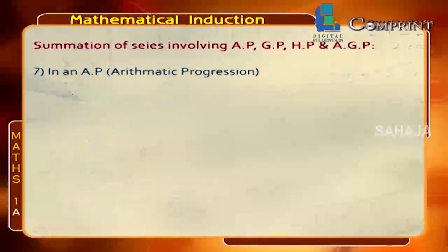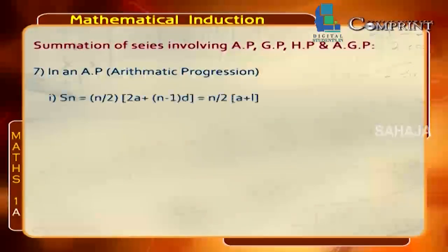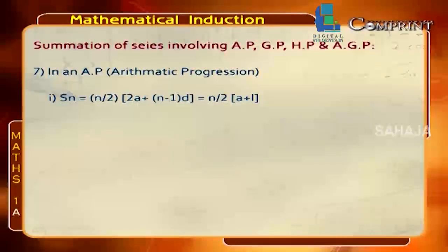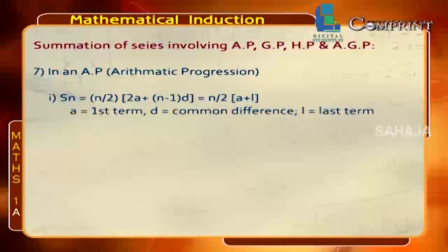In an arithmetic progression (AP), the sum Sn = (n/2)[2a + (n−1)d]. This can also be written as (n/2)[a + l], where l = a + (n−1)d is the last term. Here, a is the first term, d is the common difference, and l is the last term.